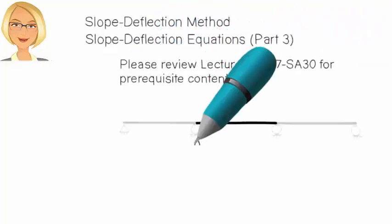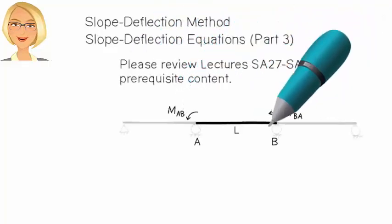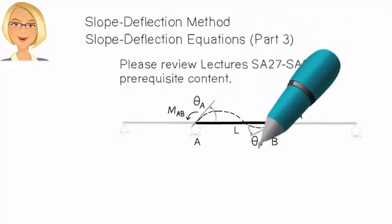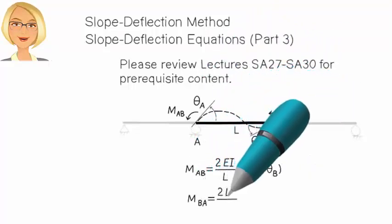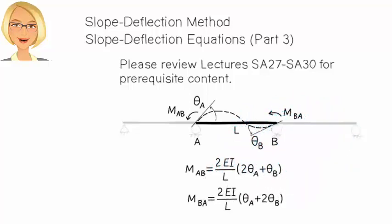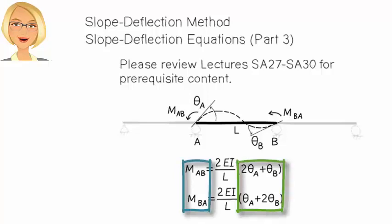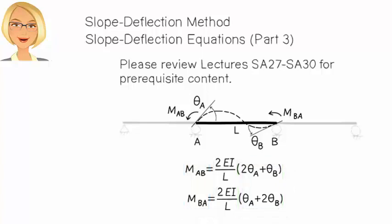The slope-deflection method is built around a pair of equations called slope-deflection equations. In lecture SA28, we derived the slope-deflection equations for a typical beam segment. These equations define member end moments in terms of member end rotations. This formulation, however, is limited in two ways.